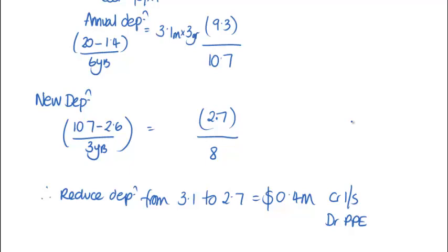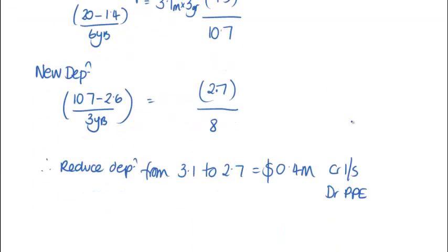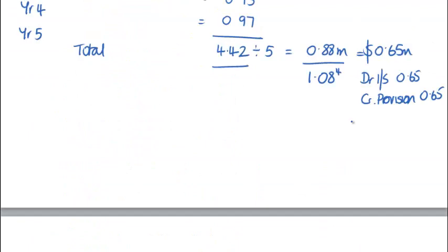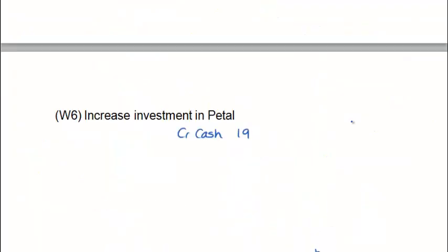We've now dealt with all of the information in the question. The question tells us to ignore deferred tax. Once we've dealt with all the information, always go back to working number 2. There's no further impact on retained earnings. We go to working number 2 and we're now going to work out our totals.